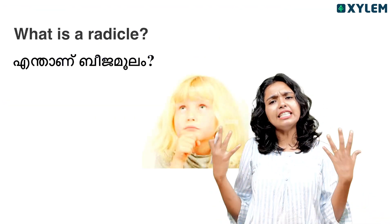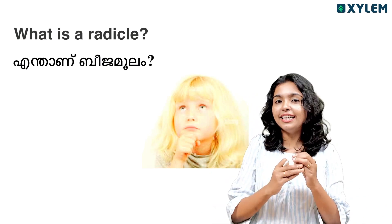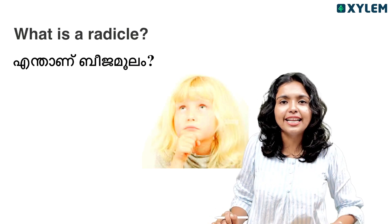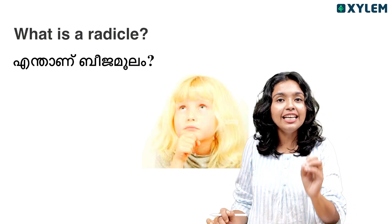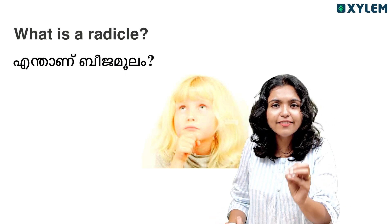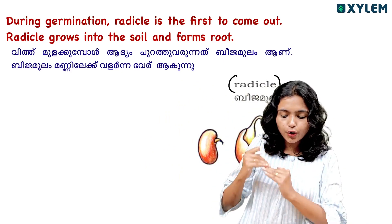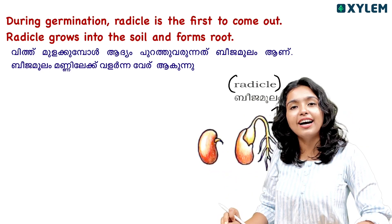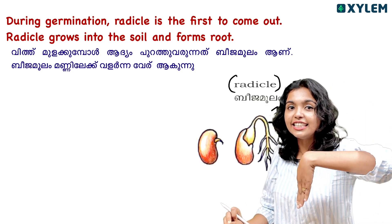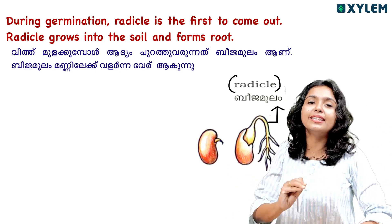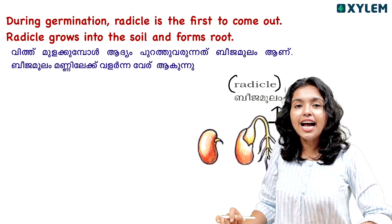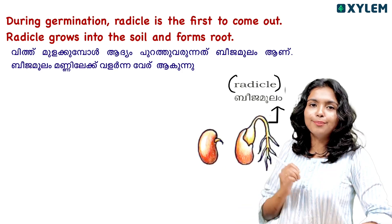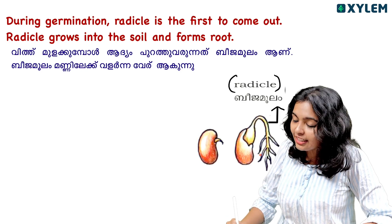Next question: what is the radicle? When a seed germinates, we look at various stages of seed germination. In one of those stages, there is a word called 'radical' — the radicle. When we plant a seed in the soil, the part that comes out first and grows downward is the radicle. The radicle forms the root system.